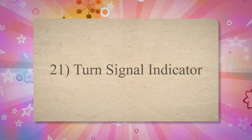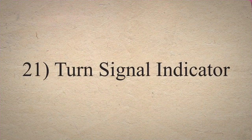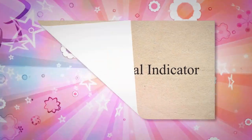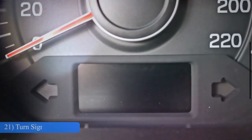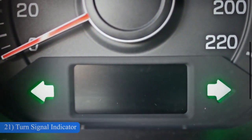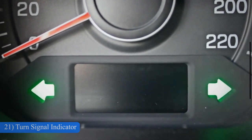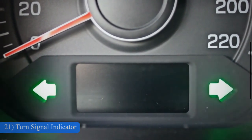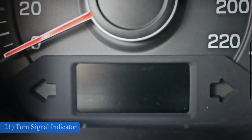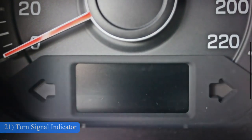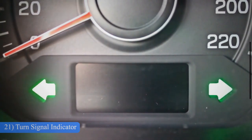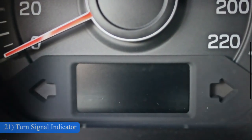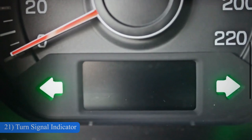21. Turn Signal Indicator. A car has four turn signals. These signals are located on all four sides of the car. In the interior of the car, the turn signal indicator usually represents as green arrows pointing in the desired direction. In some vehicles, the turn signal lever is found on the left side of the steering wheel.